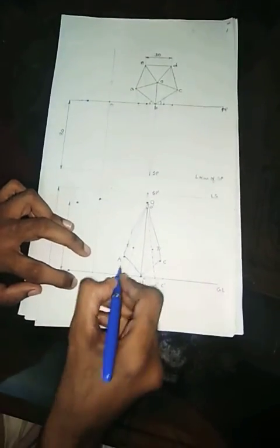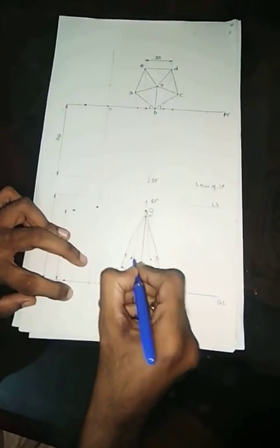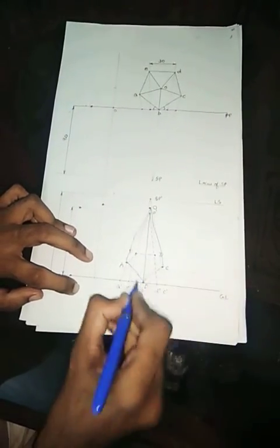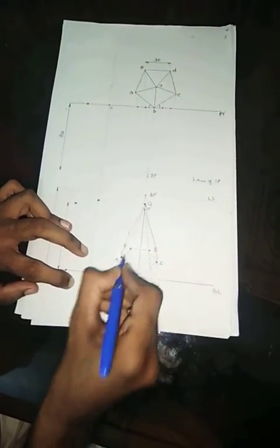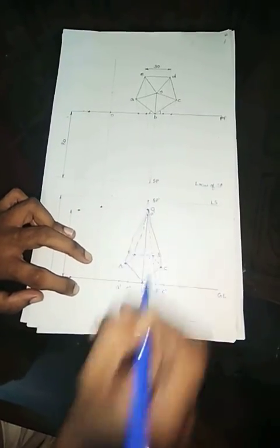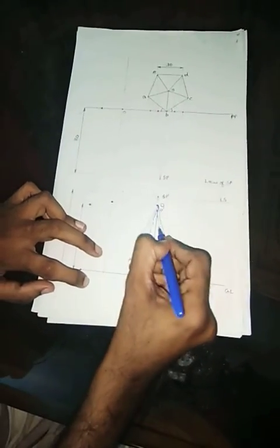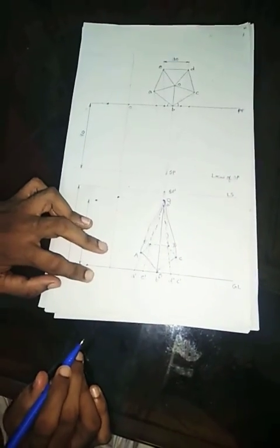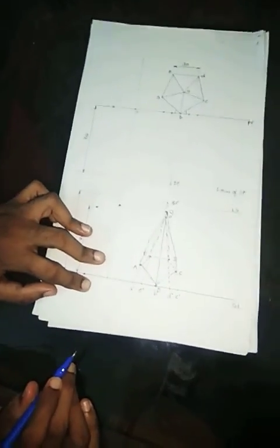The base will be invisible. AE will be invisible, ED will be invisible, DC will be invisible. Similarly, EO and DO also will be invisible. So you will be getting a figure like this. Lighten these lines. It will be invisible.